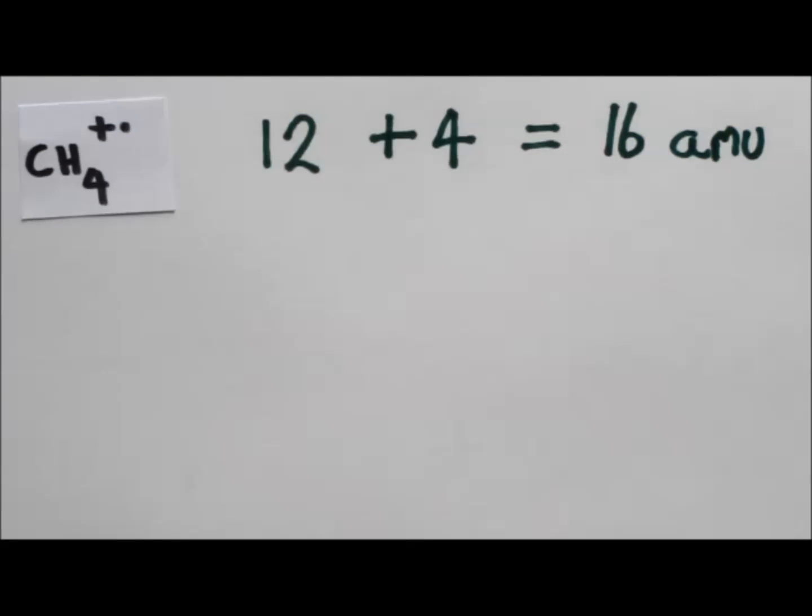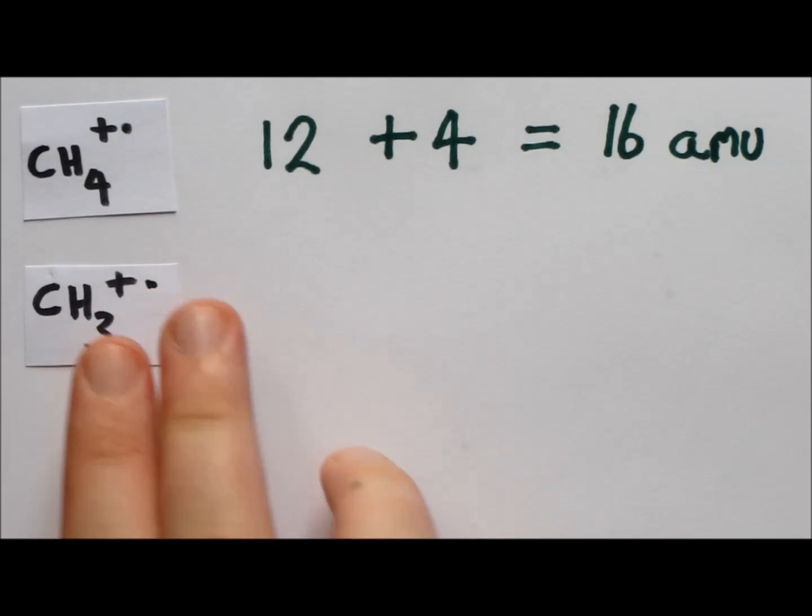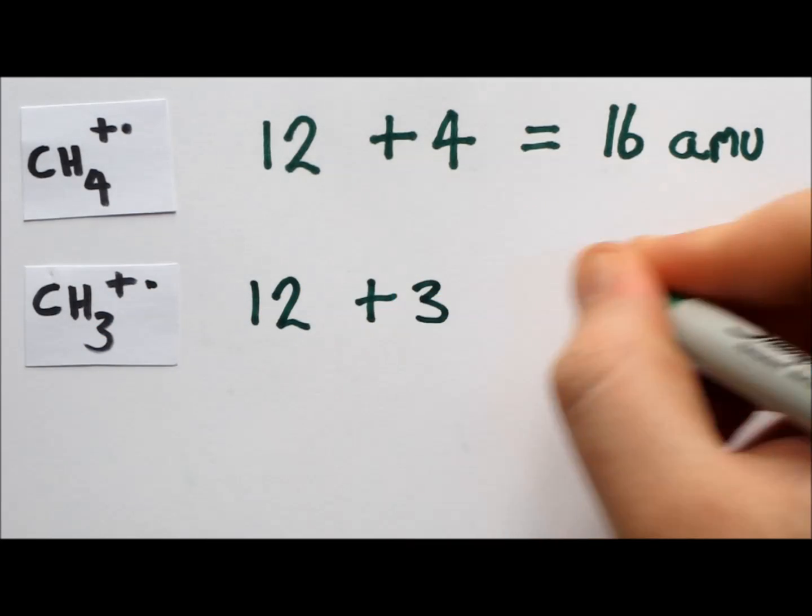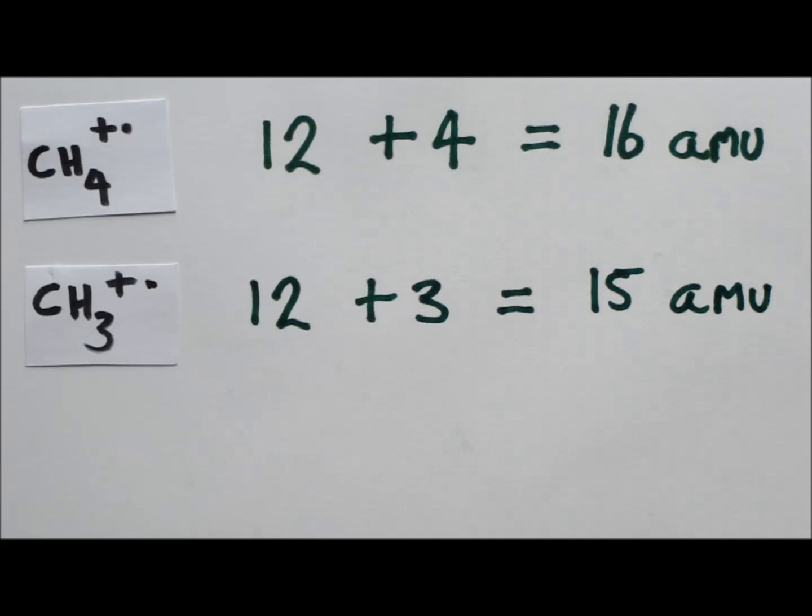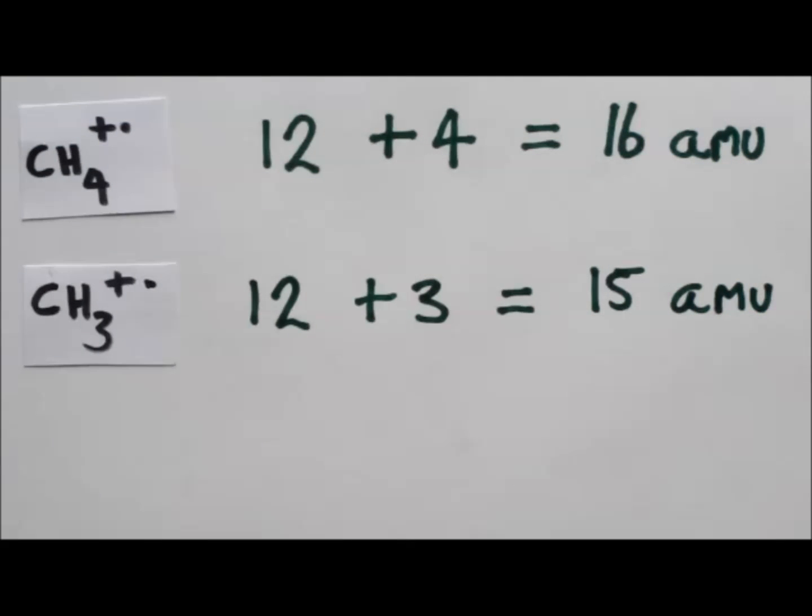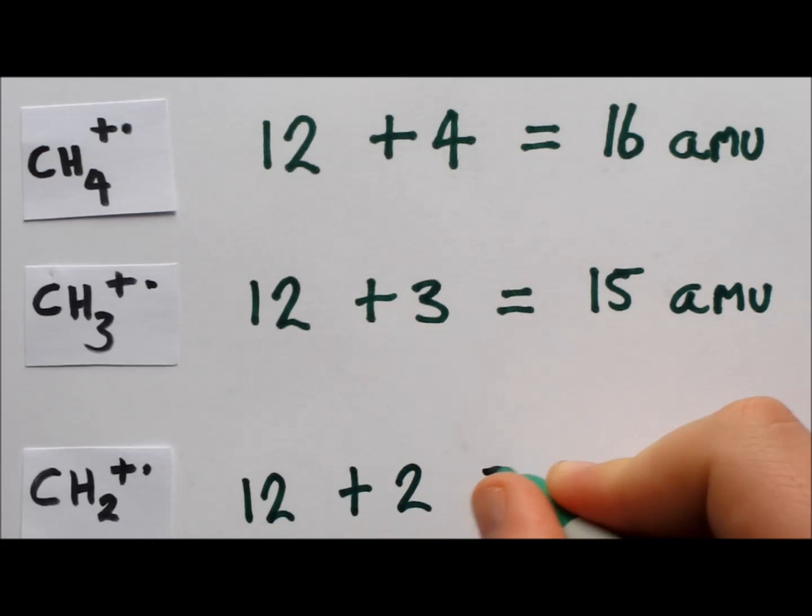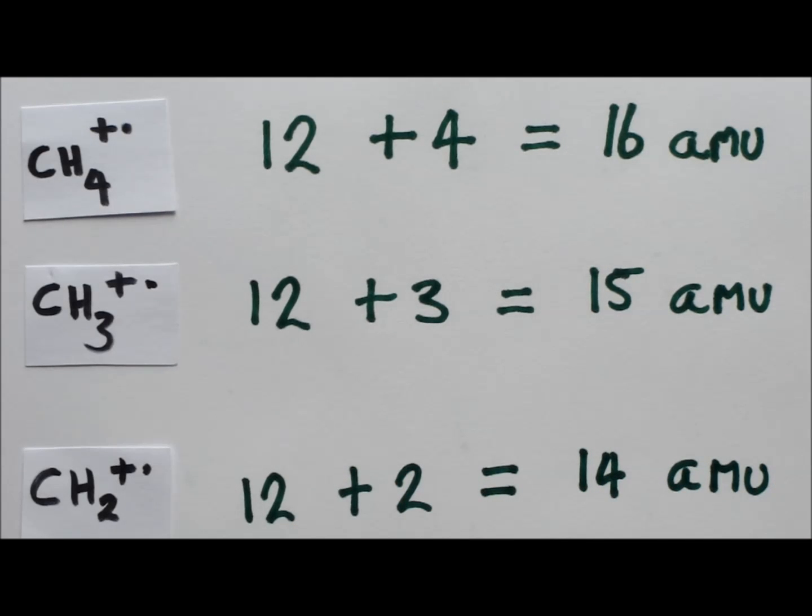The CH4 plus parent ion hasn't lost anything, so it will have the same molecular mass as methane, 16 amu. The CH3 plus fragment has lost one hydrogen, so its molecular mass will be 15 amu. And the CH2 plus fragment has lost two hydrogens, so it will have a mass of 14 amu.